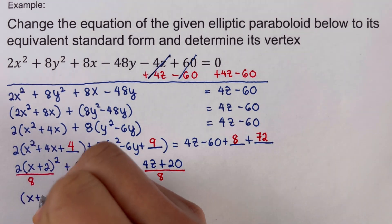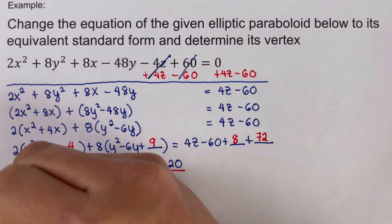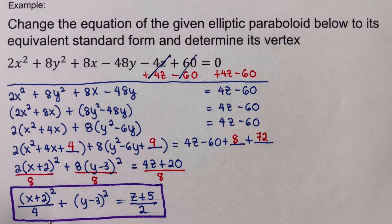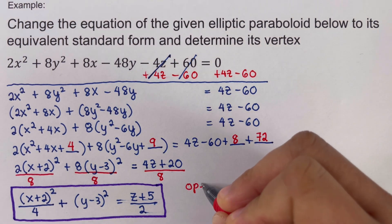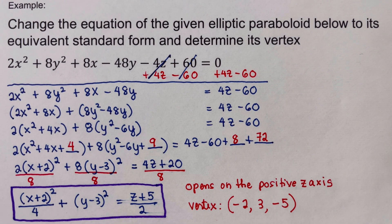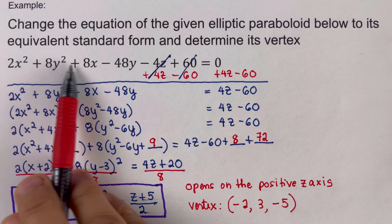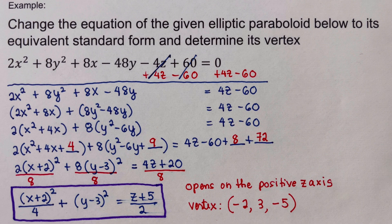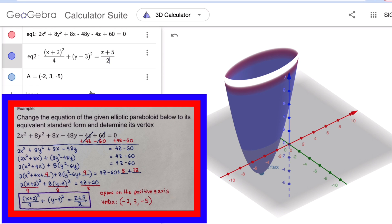We now have the standard form of the elliptic paraboloid. We can therefore say it opens on the positive z-axis, and its vertex is (−2, 3, −5). Looking at the graph in a three-dimensional coordinate system, the vertex is located at (−2, 3, −5) as expected.